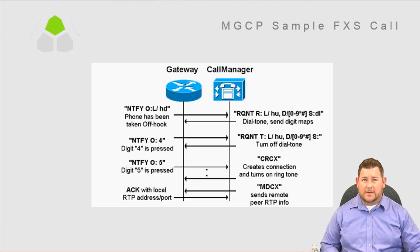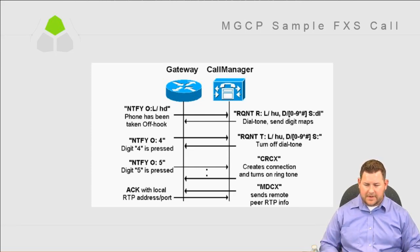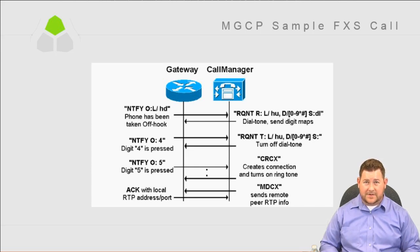Here's an example FXS call — Foreign Exchange Station means a port connected to a phone. A phone makes a call through an MGCP gateway. MGCP can control FXS ports. First, notify that the line has been taken off hook, then dial tone is provided back — very similar to how Skinny handles it. Then notify that digit 4 is pressed, dial tone is turned off, digit 5 is pressed, and since 4 and 5 was a valid dial string, it creates a connection, turns on ring tone, and determines the RTP ports needed.